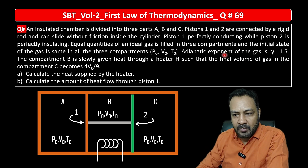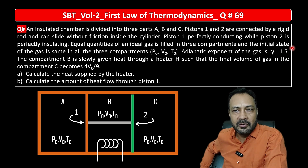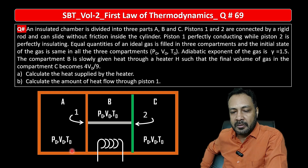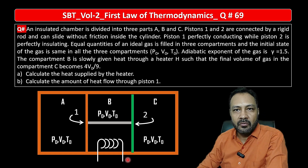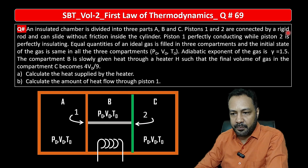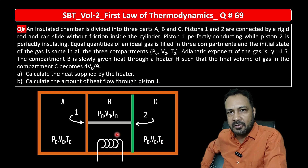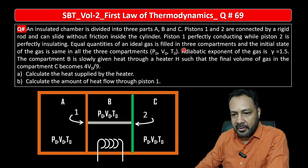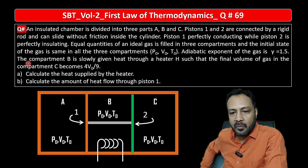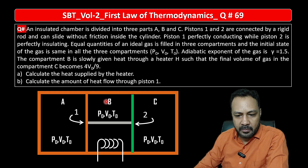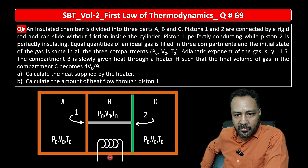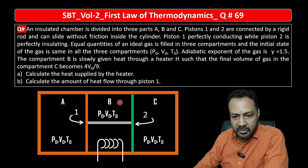In each of the three parts, the same type of gas is filled whose adiabatic exponent gamma is 1.5. The pressure, volume, and temperature in each part are the same initially: P₀, V₀, T₀. Now, piston 1 and piston 2 are connected by a rigid rod that can slide without friction inside the cylinder. Piston 1 is perfectly conducting and piston 2 is perfectly insulating (adiabatic). Equal quantities of ideal gas fill all three compartments. A heater is inserted through part B and slowly heats the gas.